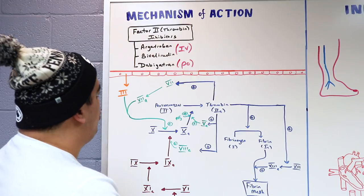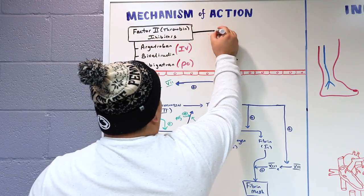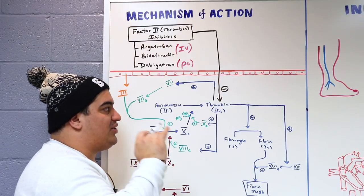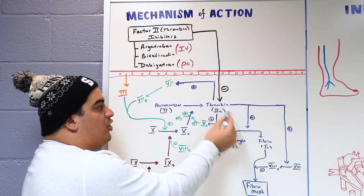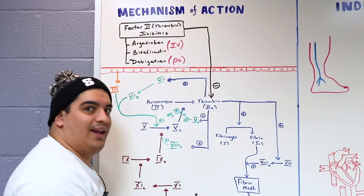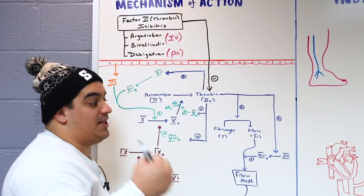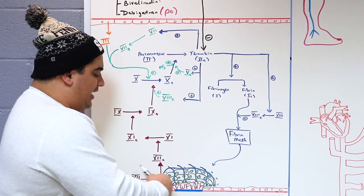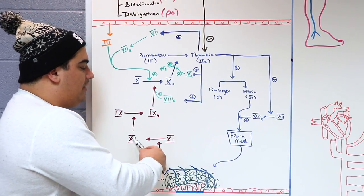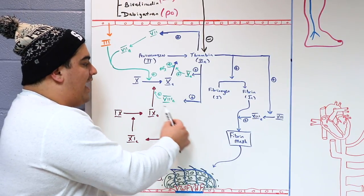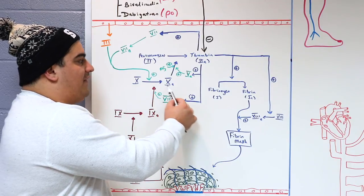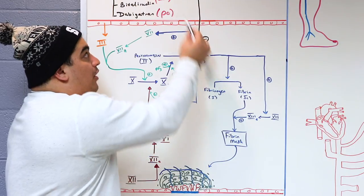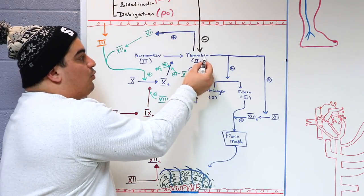Factor 2 inhibitors work by inhibiting thrombin. Reviewing the coagulation cascade: a platelet plug forms, the negative charge surface activates factor 12, which activates factor 11, then factor 9. Factor 9 and factor 8 combine to activate factor 10, which with factor 5 and platelet factor 3 converts prothrombin into thrombin.